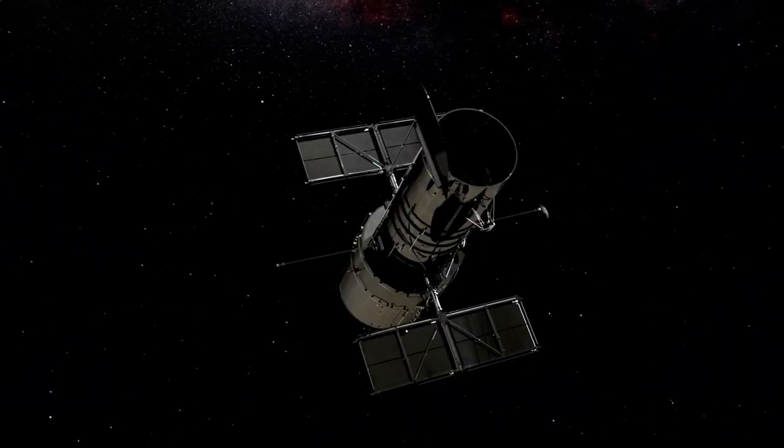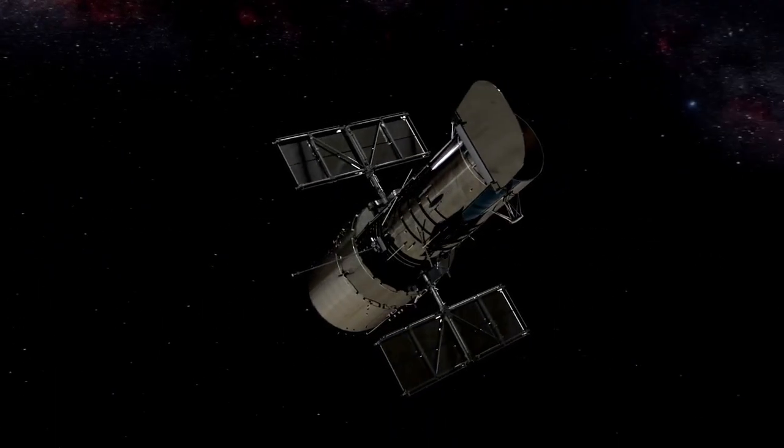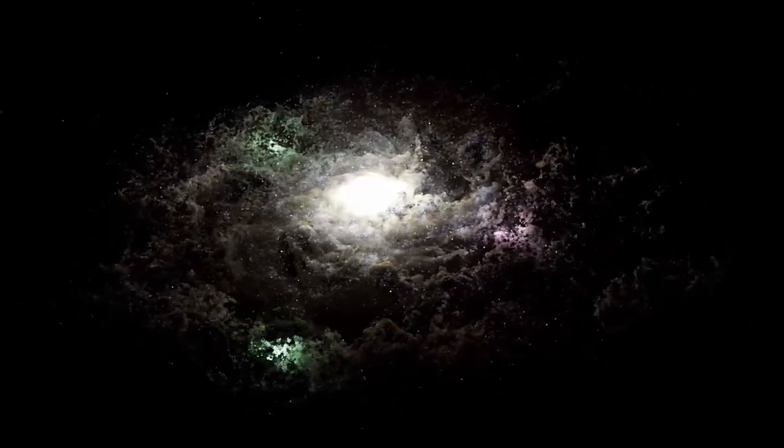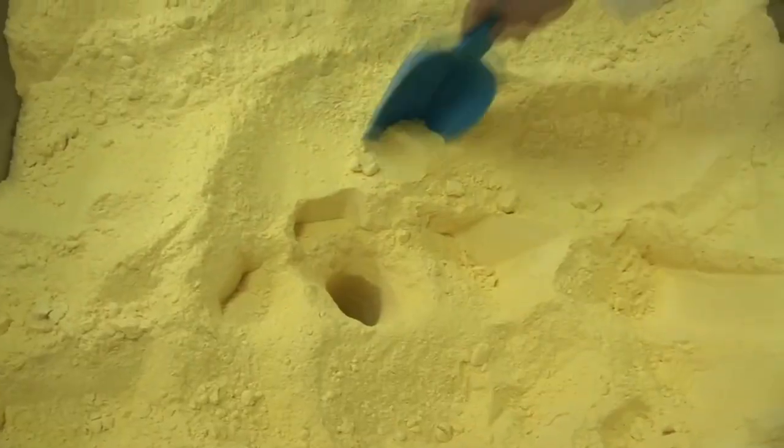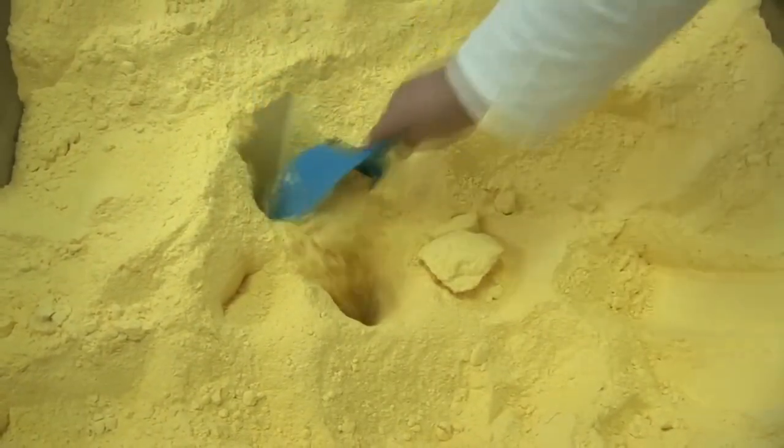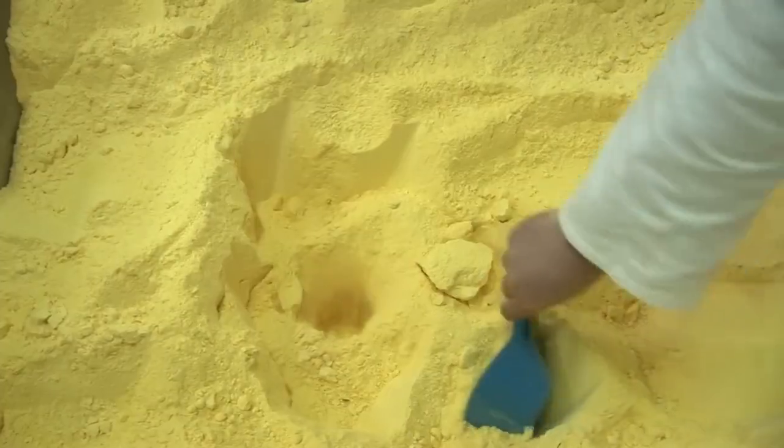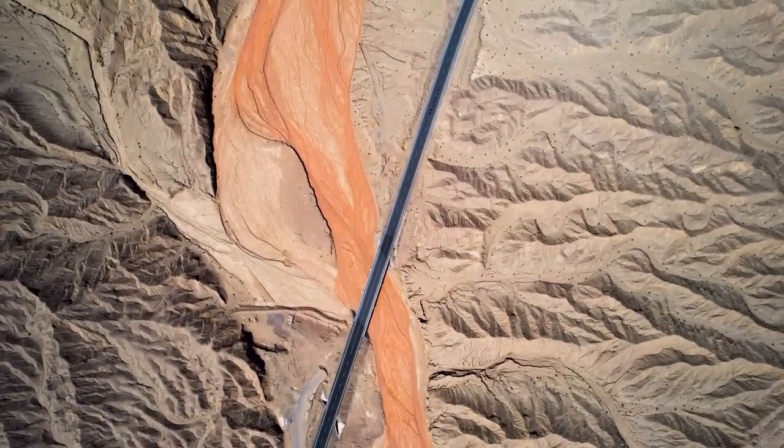But the second layer is where things got interesting. The AI detected encoded imagery: visual information represented in ways that don't match how humans typically encode pictures but still represent spatial data. When the AI reconstructed these images, researchers were shocked to see detailed maps of Earth's surface showing continents, oceans, major geographical features and, disturbingly, concentrations of electromagnetic emissions that correspond to human population centers.